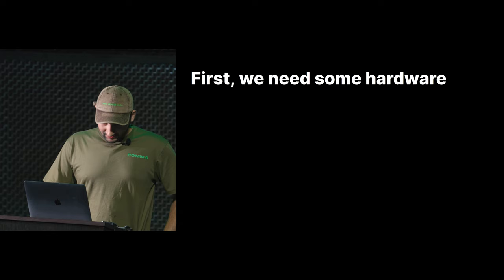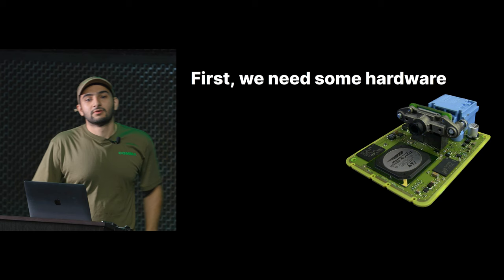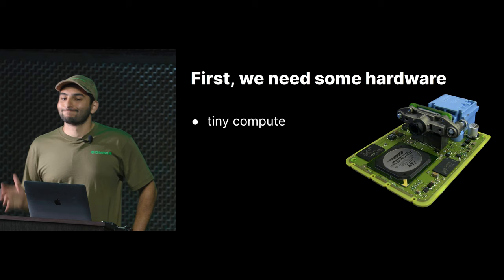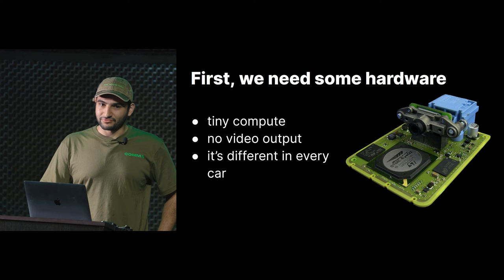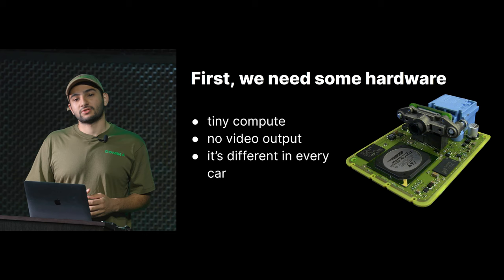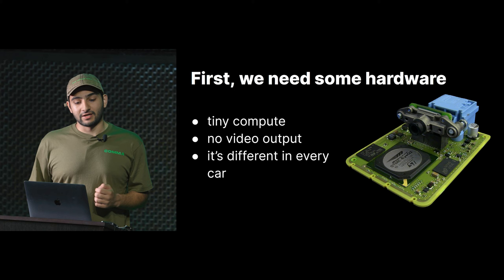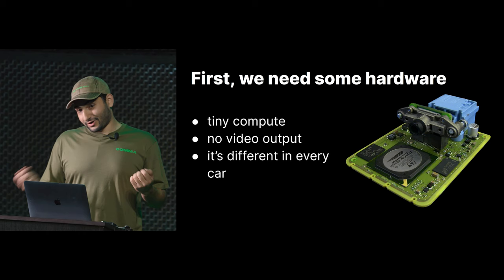First, we need some hardware — this is what comes in your car. It's a lane-keep camera. It's got a very tiny amount of compute, so unfortunately we can't run OpenPilot on it. It's also got no video output, so we don't get a raw camera stream out of it. And it's different in every car, so for every car we'd have to reverse-engineer the messages, figure out how to interface with it, possibly get a camera stream out of it, and figure out how to run it on that processor.